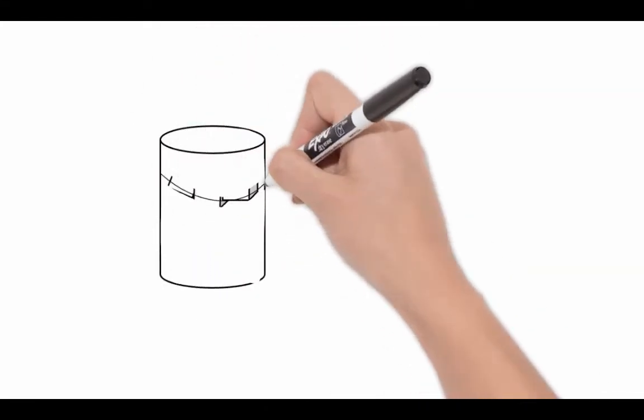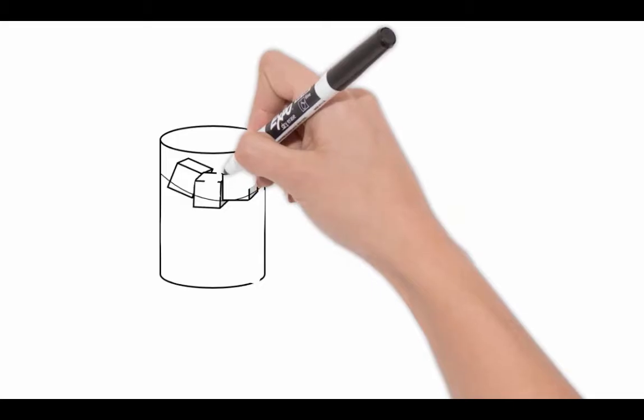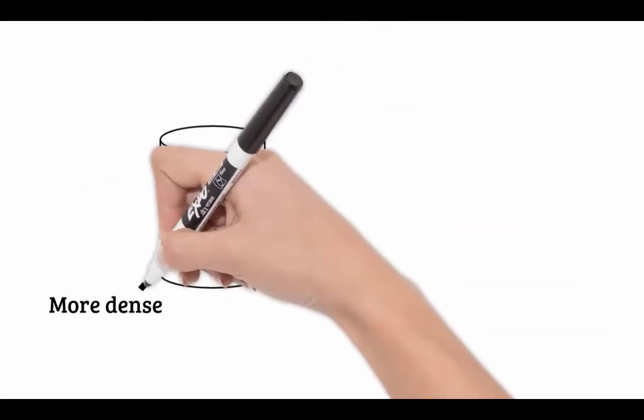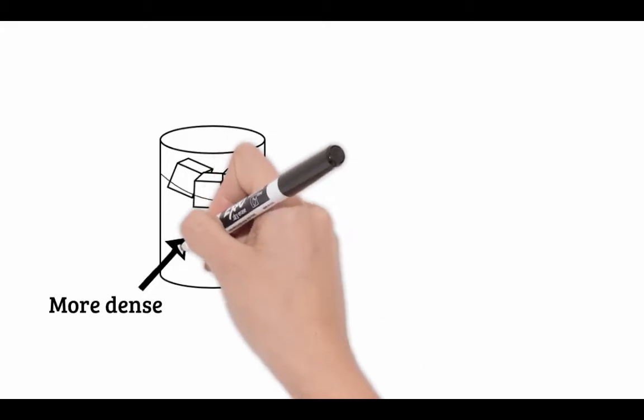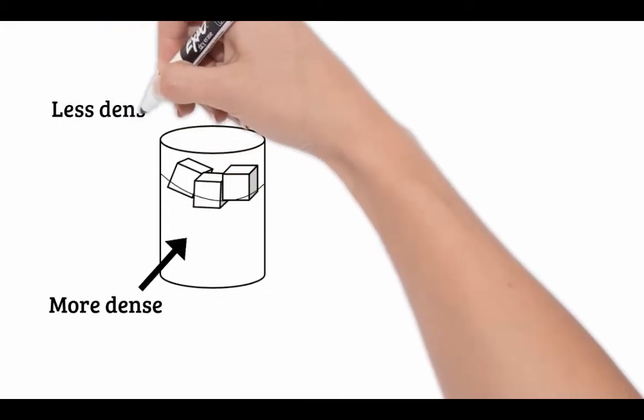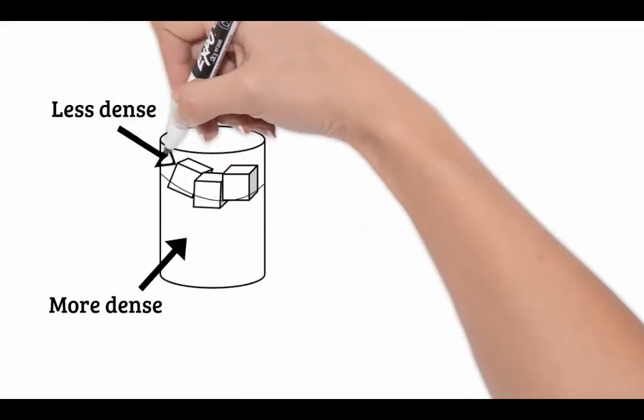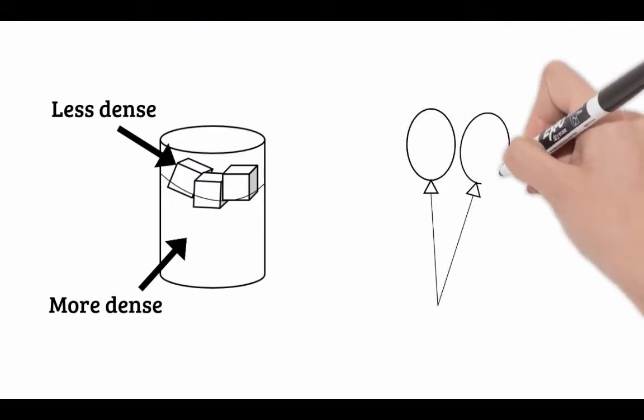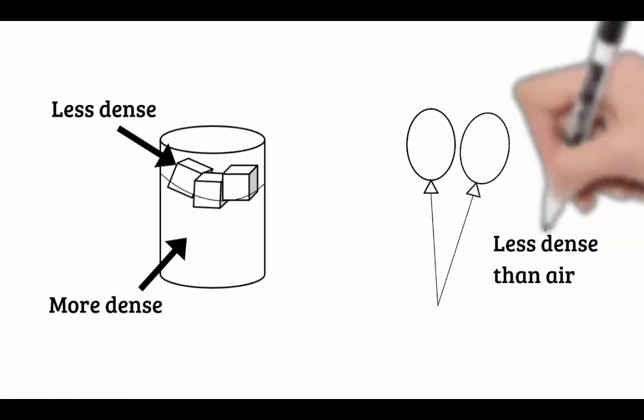We can see practical examples of density in everyday life. Consider a glass of water with ice. The ice floats on top. This is because the ice is less dense than the water, because the particles are held further apart. Another example is a helium balloon. The balloon floats because it is less dense than the air around it.